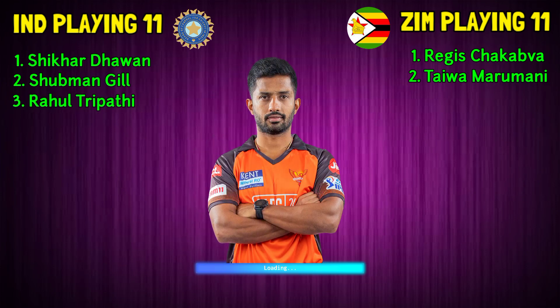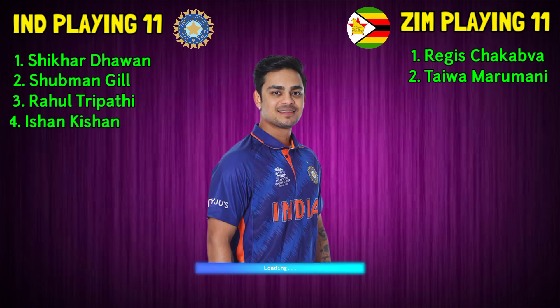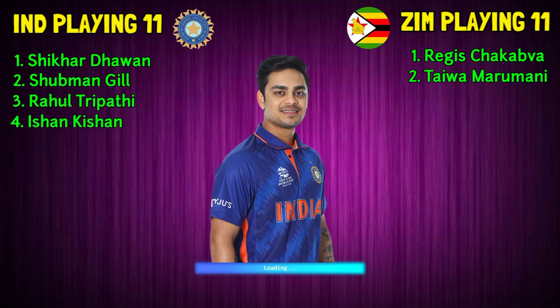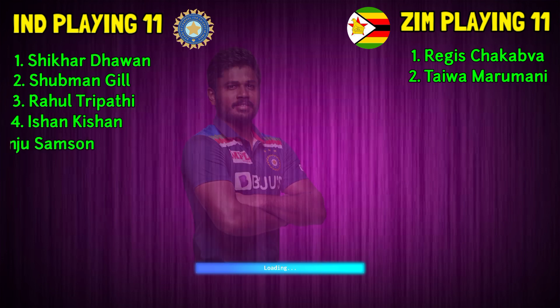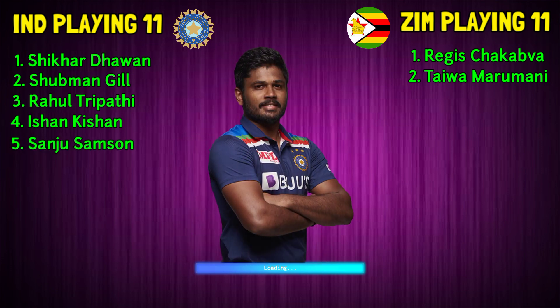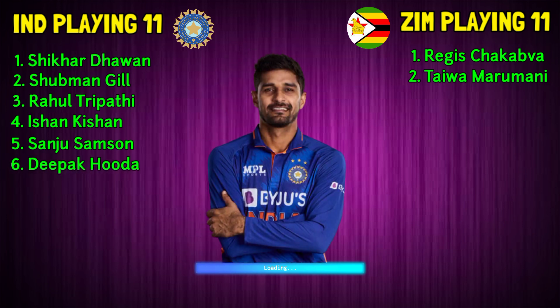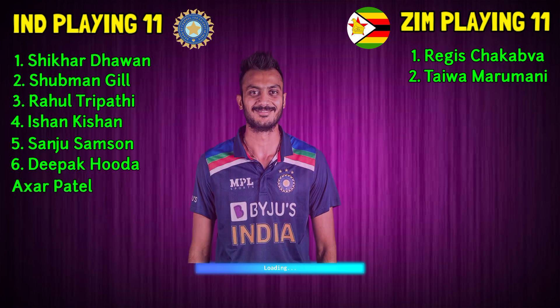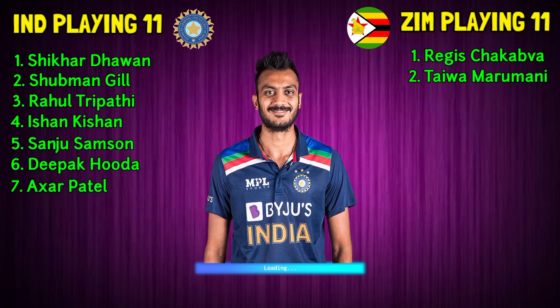India team middle order: No.3 Rahul Tripathi, right-handed batsman. No.4 Ishan Kishan, left-handed batsman. No.5 Sanju Samson, wicket keeper. No.6 Deepak Hooda, all-rounder. No.7 Axar Patel, all-rounder.